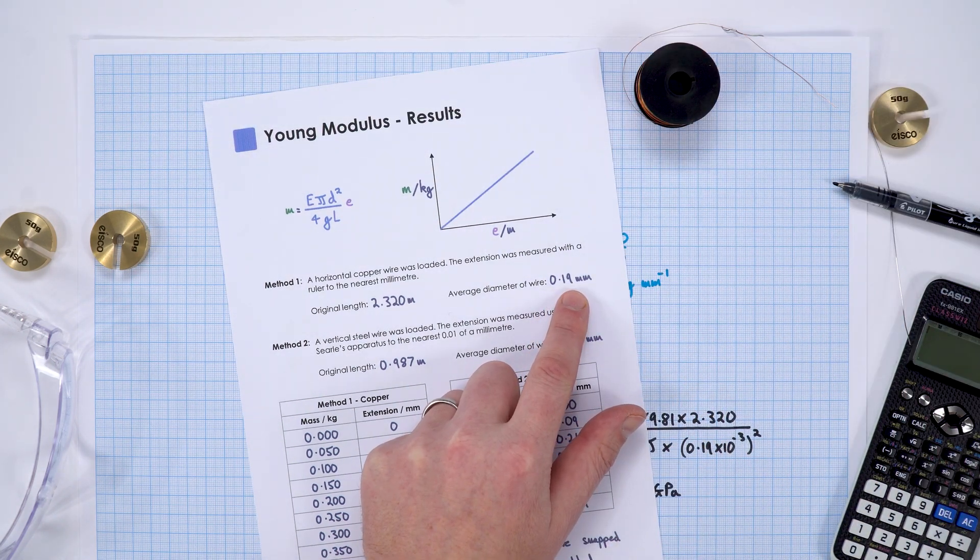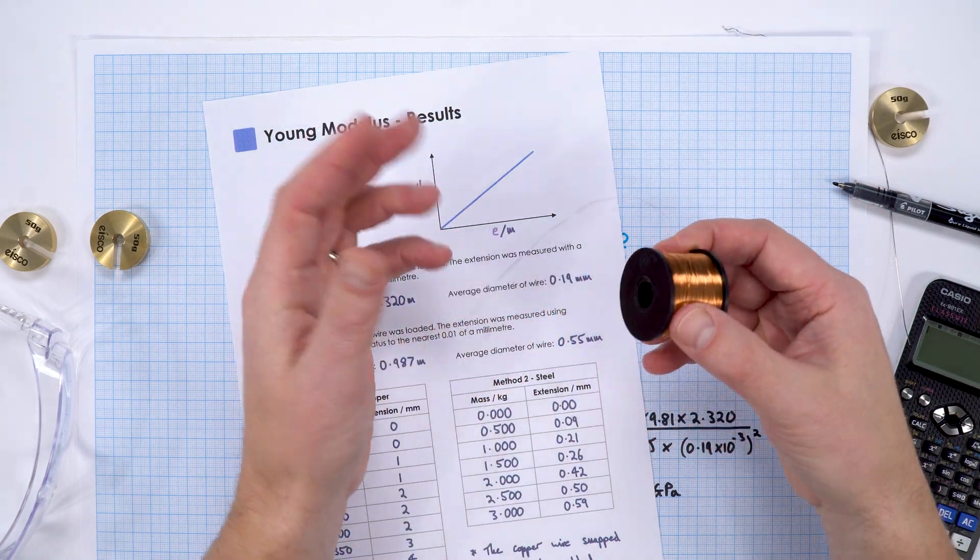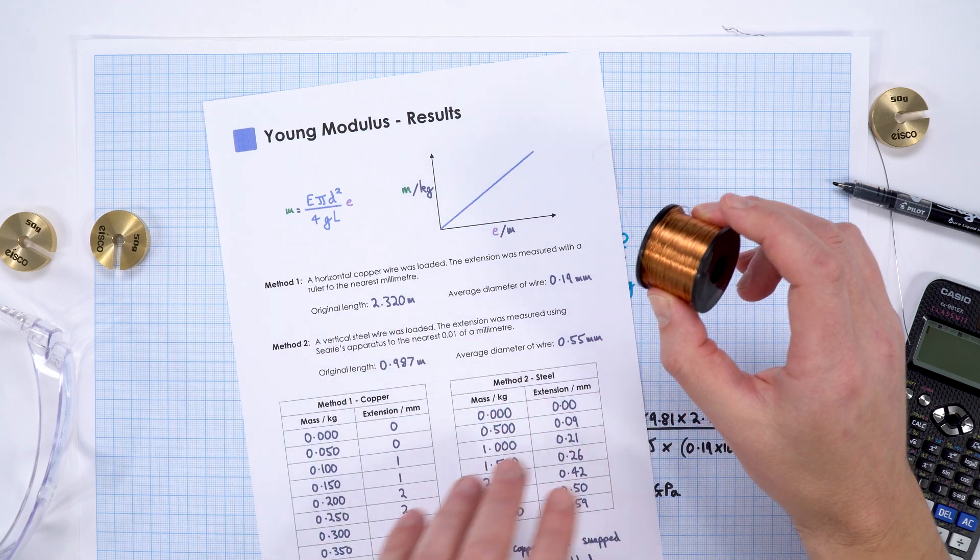In this case we have 36 SWG (standard wire gauge) copper.